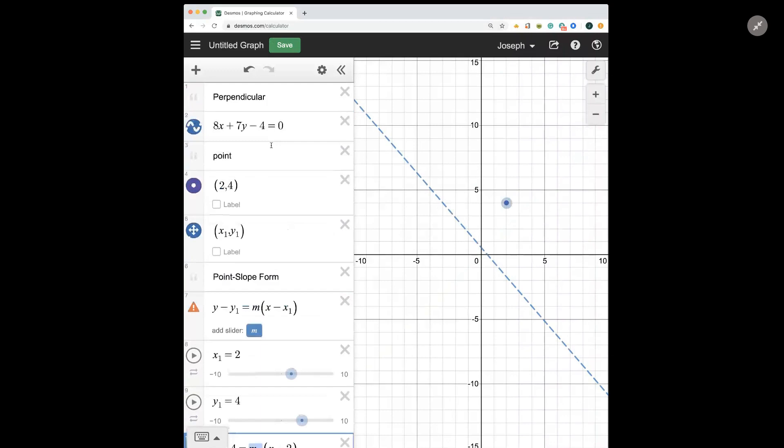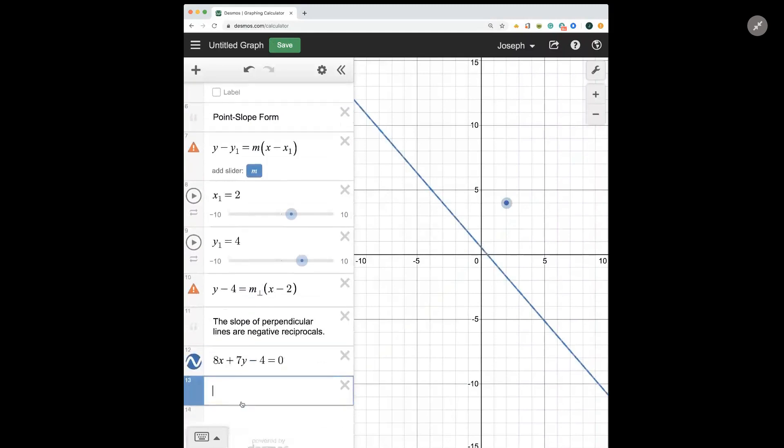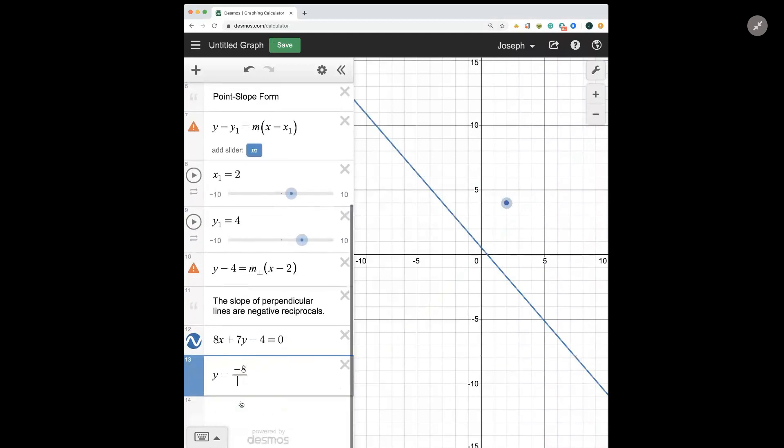So if we're starting with this line right here, what we want to do is put it into slope intercept form. And since this isn't a video on converting into slope intercept form and we want to do this quickly, I'll just simply show you that after you convert it, which I'm assuming you can do. If not, that would be a great topic for a new video. Make the request.